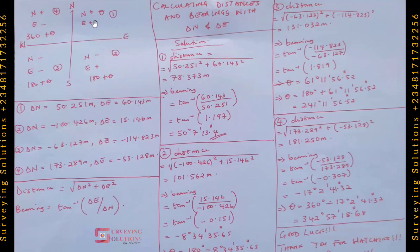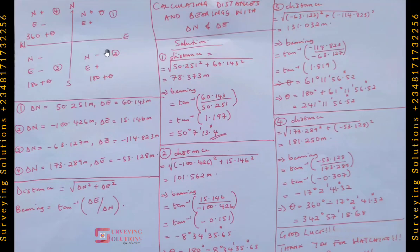Now let's discuss the corrections we apply to our bearings to determine direction from north. On the first quadrant, using tan inverse of delta easting over delta northing gives you the bearing directly — that is the bearing of that particular line.